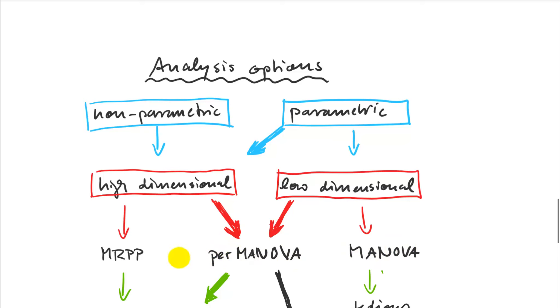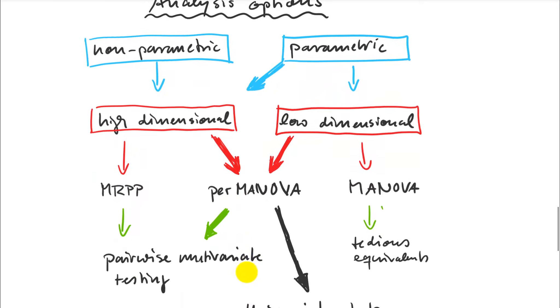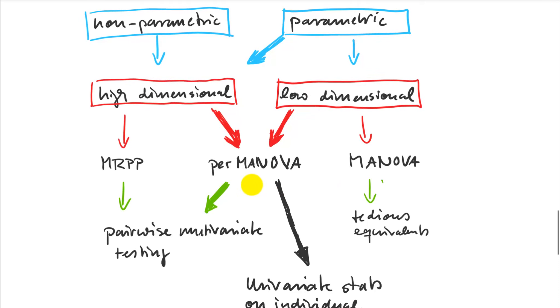This one works just as well, but it can't handle multiple factors at the same time. Once you have a significant result here, you do pairwise multivariate testing, and I showed you the follow-up procedure above. That is not available for multivariate analysis of variance, so you have to subset the datasets manually. That's another reason why you want to use this one here.